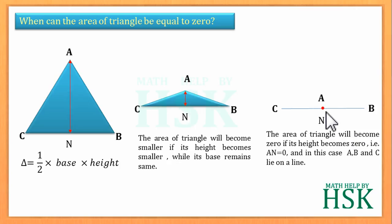According to the figure, AN will be equal to zero. In this case, point A and point N will lie on each other, and we can also say that point A will lie on the base BC. This implies that A, B, and C will lie on a line, that is, they will be collinear.